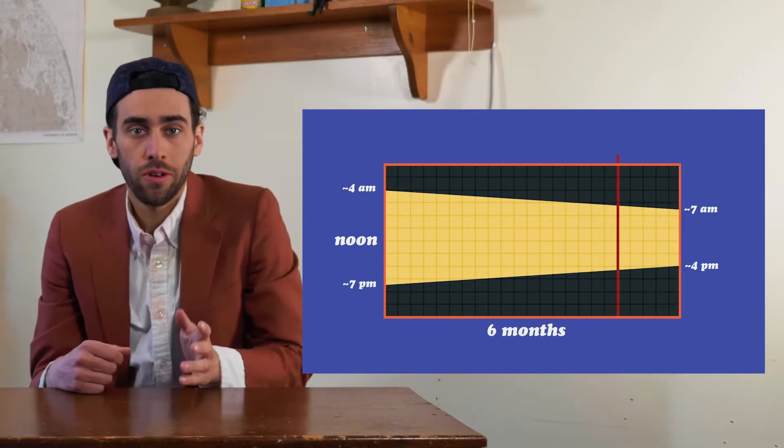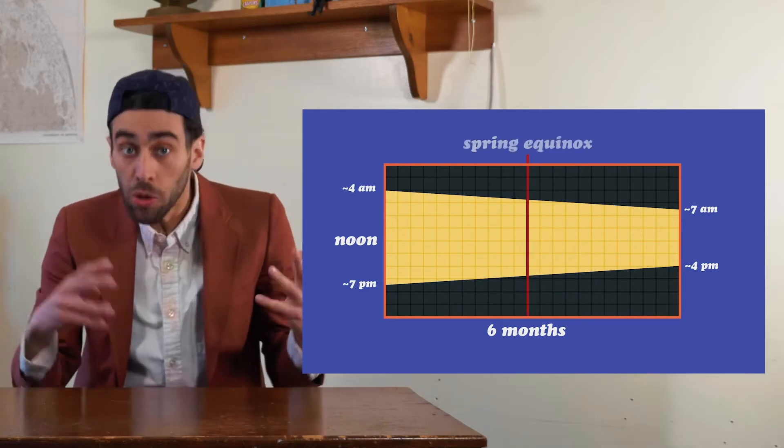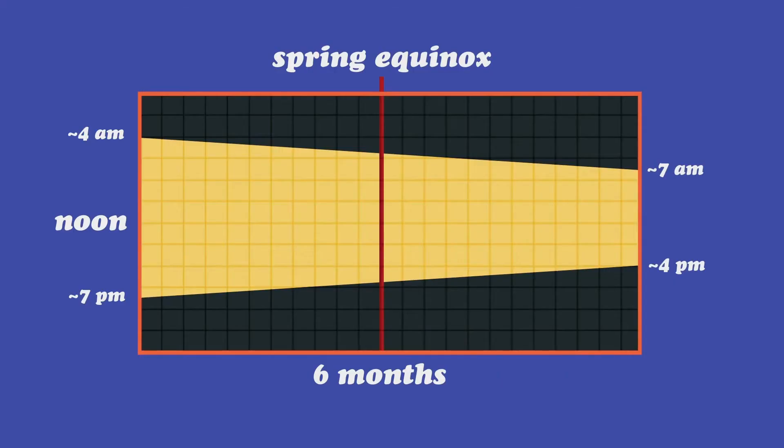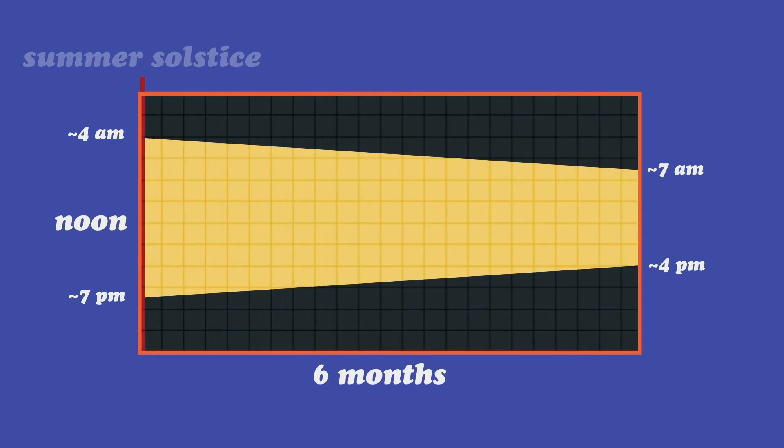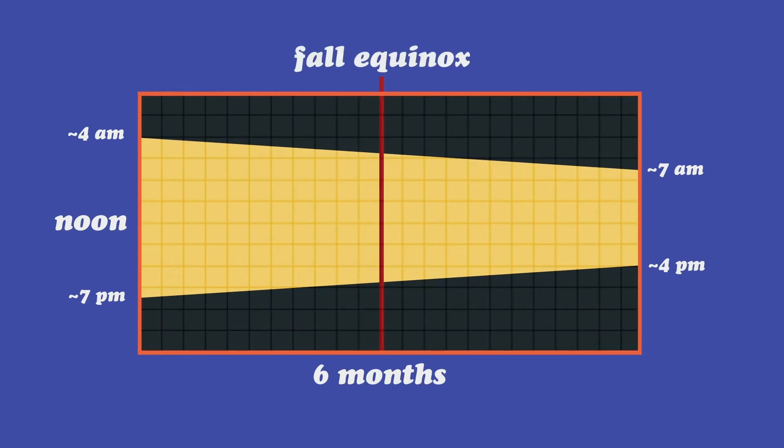So if we move from the winter solstice, we eventually get to the spring equinox. Hooray! So the spring and fall equinoxes are smack dab in the middle of the longest and shortest days of the year, which is why they both have 12 hours of day and night. That's why they're the most average days of the year.